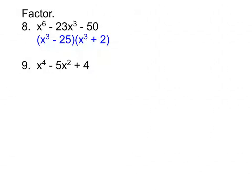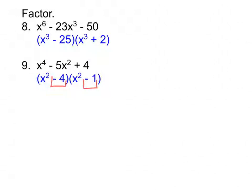For number 9, we start each parenthesis with x squared, then find two numbers that add to the middle and multiply to the last — giving x squared minus 4 times x squared minus 1. Both of those factor further: x squared minus 4 becomes x minus 2 times x plus 2, and x squared minus 1 becomes x minus 1 times x plus 1. The final completely factored form is x minus 2 times x plus 2 times x minus 1 times x plus 1. The order of the parentheses does not matter.